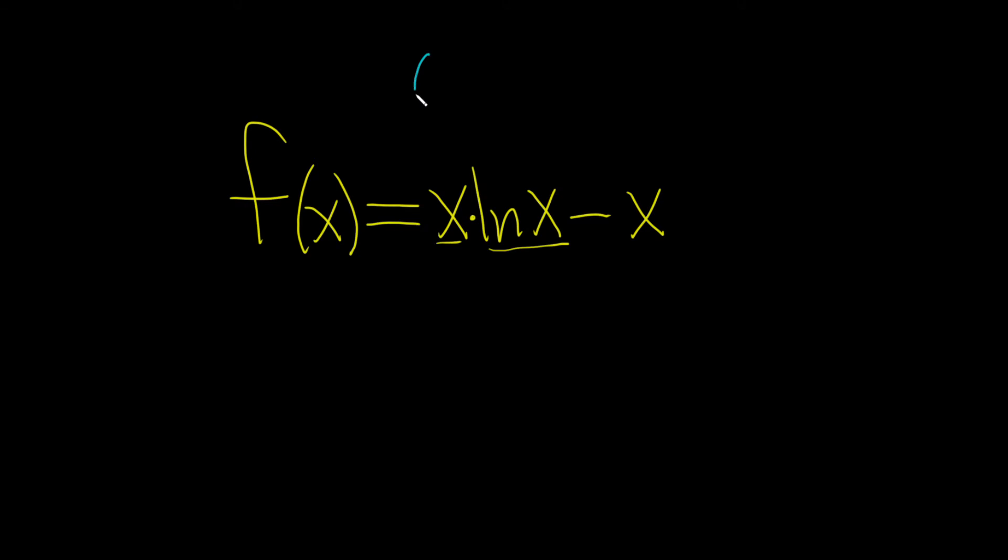So in calculus, if you have two functions, say f times g, and you want to take the derivative, the product rule says that f is your first function and g is your second function. And so this is the derivative of the first times the second plus the first times the derivative of the second. That's the product rule.